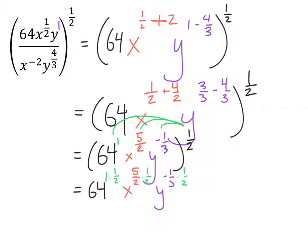If we multiply these out, we get 64 to the power of 1 half, x to the power of 5 fourths, and y to the power of negative 1 sixth. So we're just multiplying these fractions, numerators and denominators, straight across.